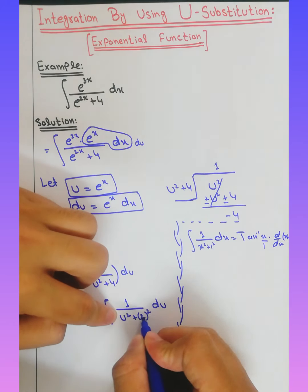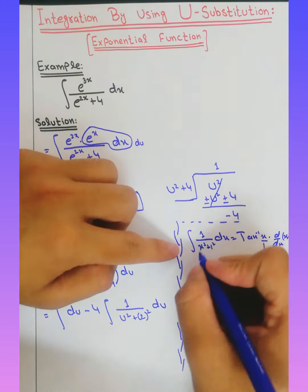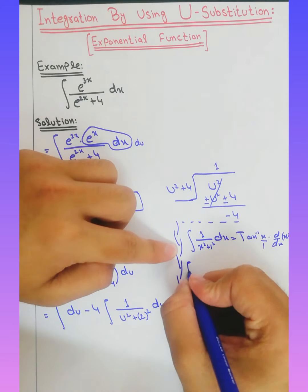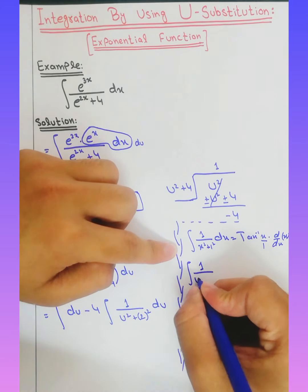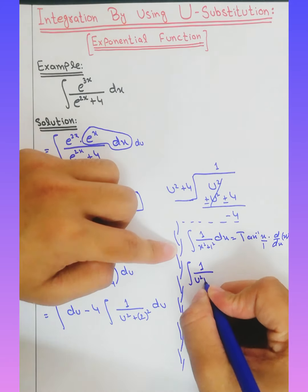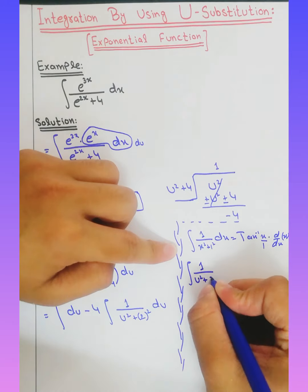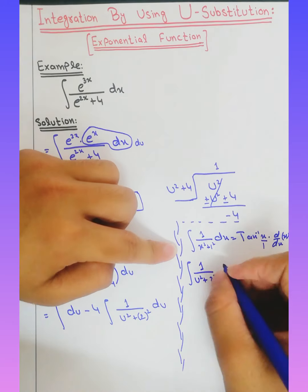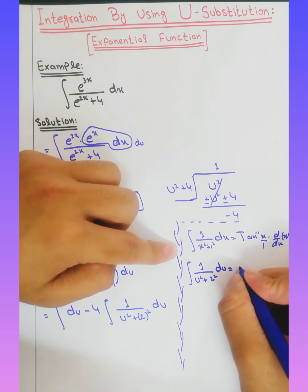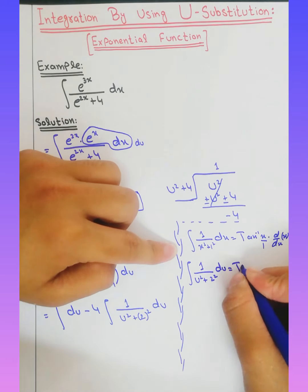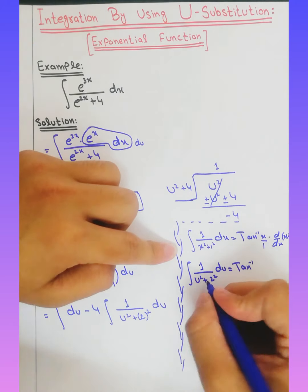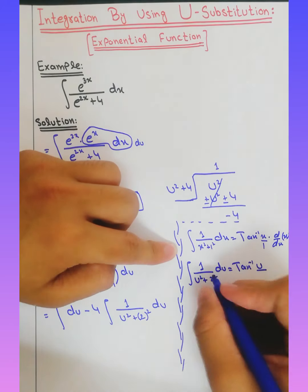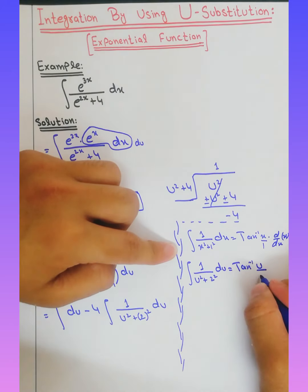With u squared plus 2 squared in the denominator: integration of 1 over (u squared plus 2 squared) d of u equals tan inverse of (u divided by 2).